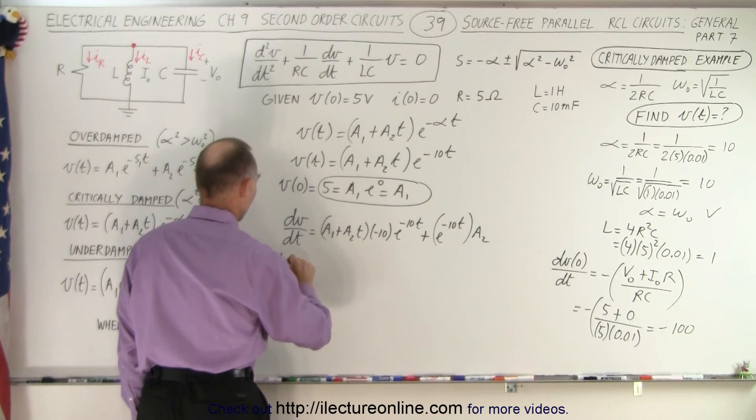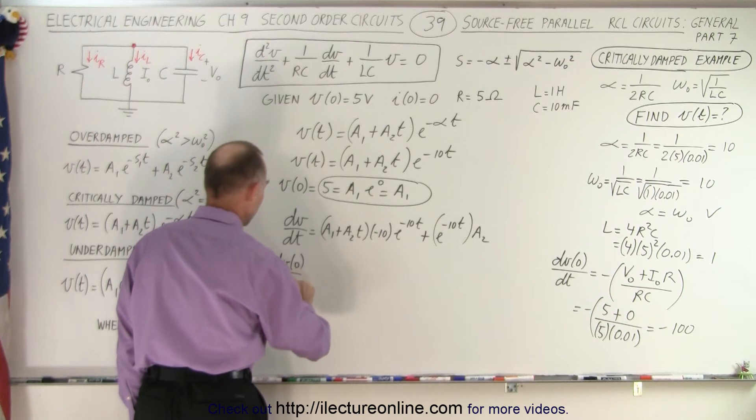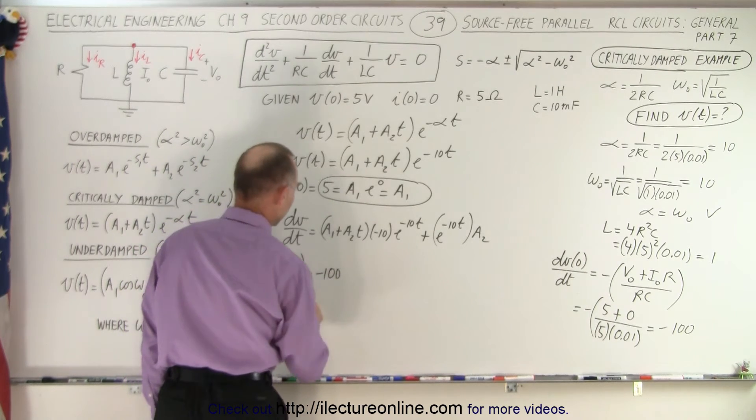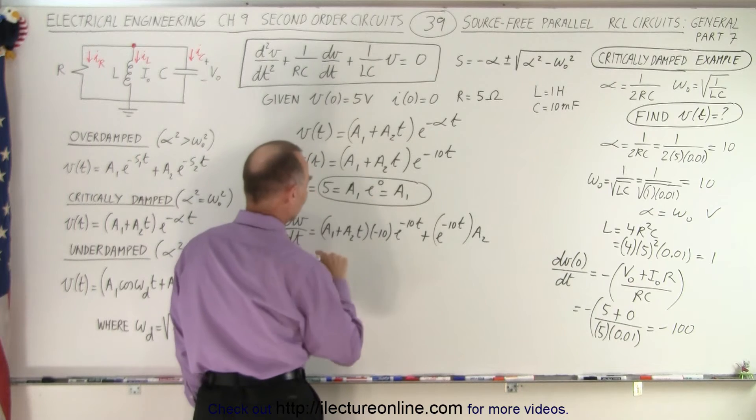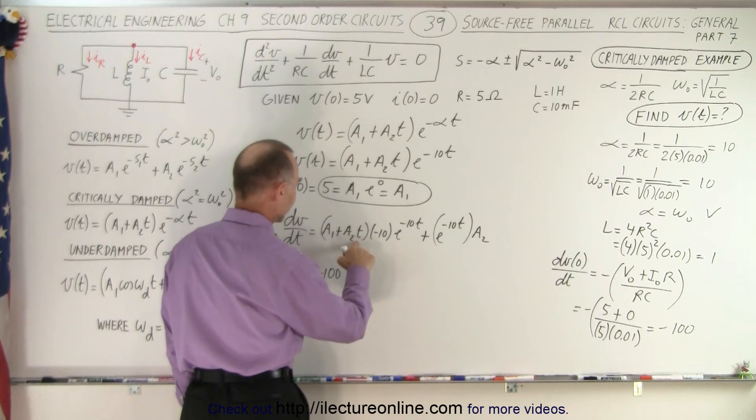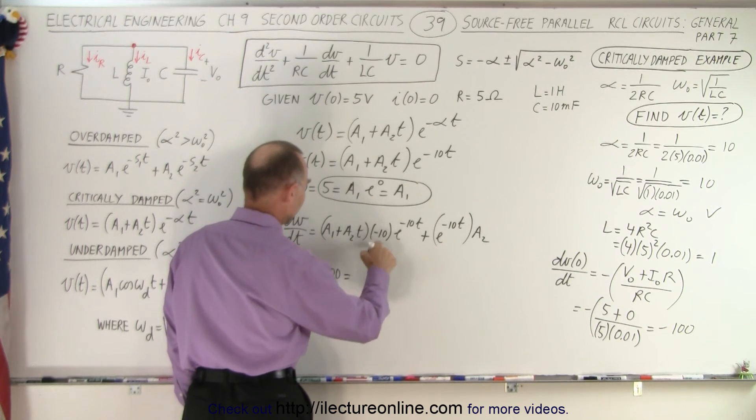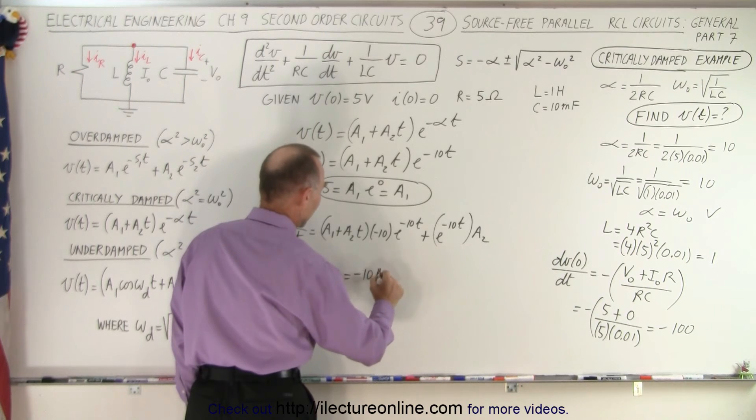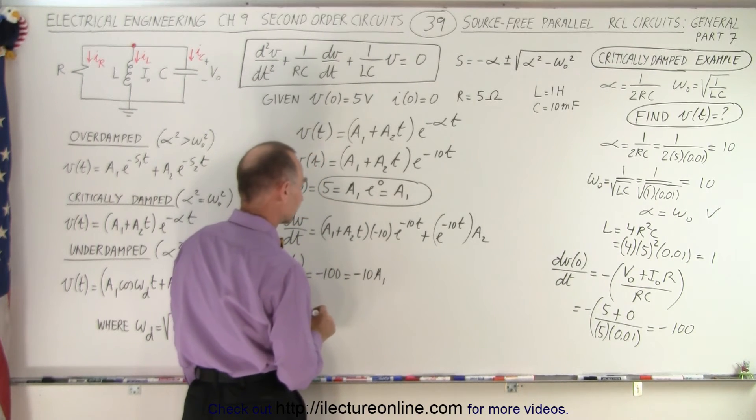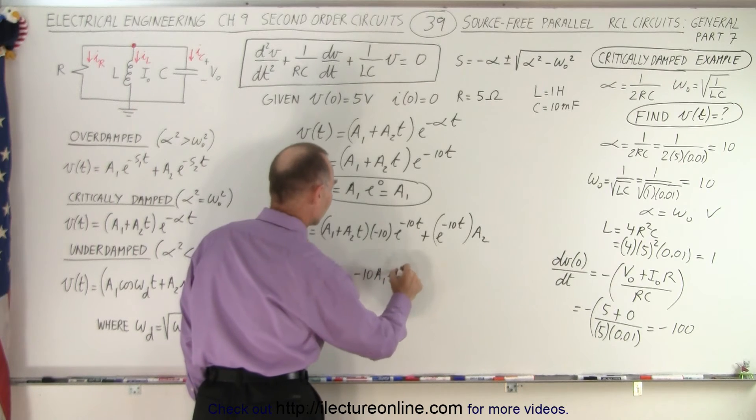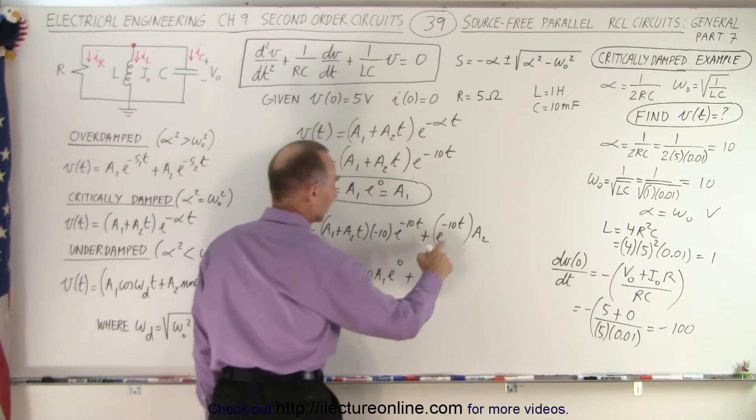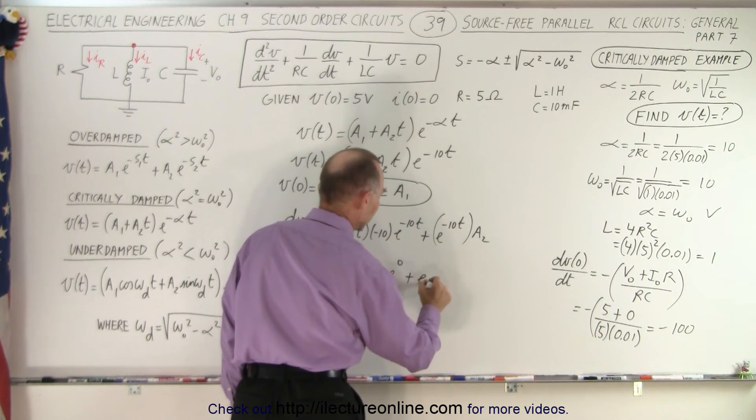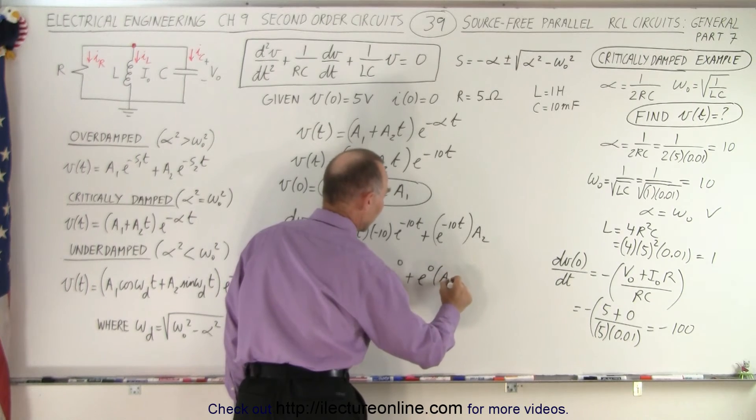So dV when time is equal to 0 dt is equal to negative 100 now we plug in a 0 for every T that we have so we get a 0 in here. So this is equal to negative 10 A1 times E to the 0 plus E to the 0 times A2.